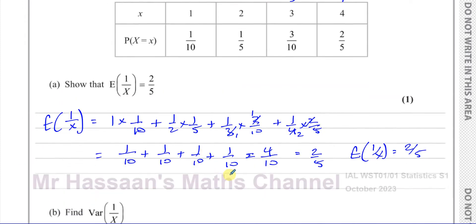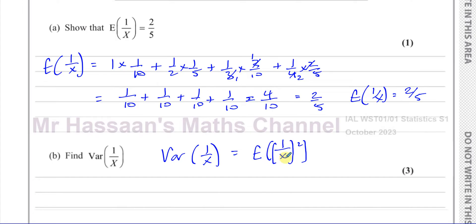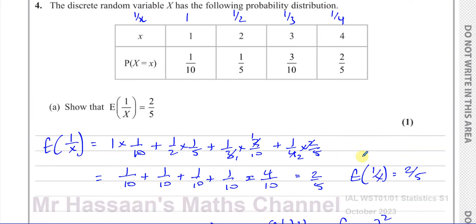Part B says: find the variance of 1/X. The variance of 1/X equals the expected value of (1/X)² minus the square of the expected value of 1/X. So we need E((1/X)²) and then subtract the square of 2/5. We take the 1/X values and square them: 1² = 1, (1/2)² = 1/4, (1/3)² = 1/9, and (1/4)² = 1/16. Those are the (1/X)² values.